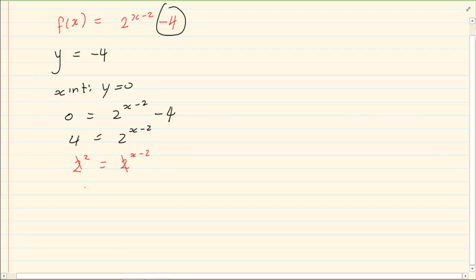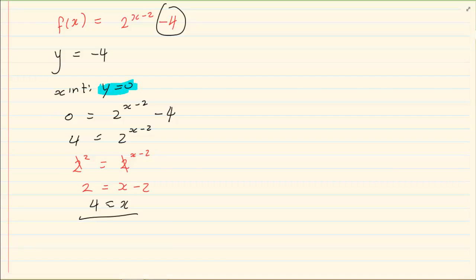Cancel my bases. So I have 2 is equal to x minus 2. And if you solve, x is equal to 4. So what is my coordinate? I can clearly see that y is 0. So my coordinate is 4 and 0.